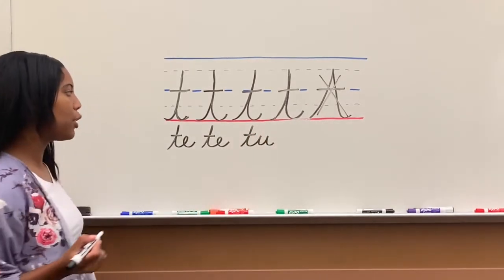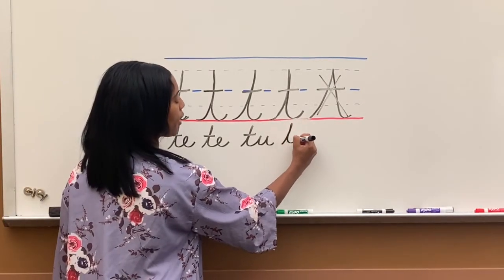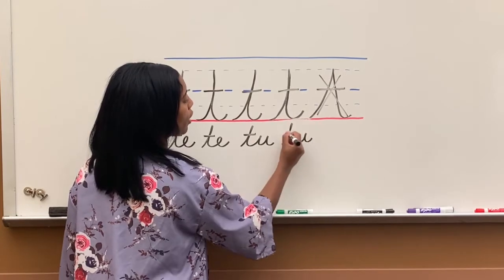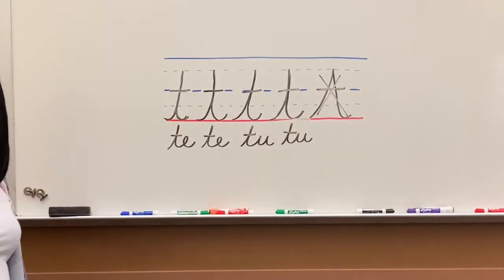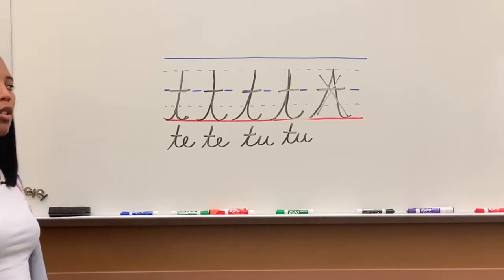Remember, we learned E and U already. Again, whenever I do T-U, I do T, then I add my U, then I cross. Now, whenever we connect T-O or T-A, we write those a little differently.